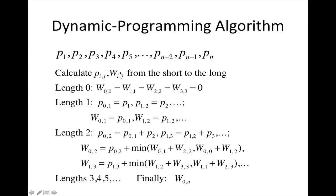What we mean here is that first we calculate pij and we calculate wij from the shortest to the longer strings. First we calculate wii for length zero, and those are all zero.